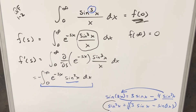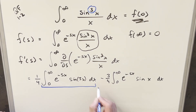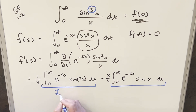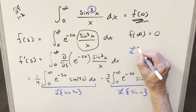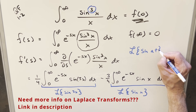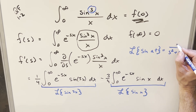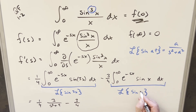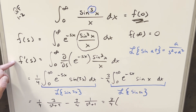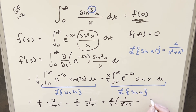Now I rewrite the integral using that formula. Distributing the minus sign and breaking into two integrals, we have two Laplace transforms. Using the formula that the Laplace transform of sin(at) equals a over (s² + a²): for the first term, a = 3, giving 3/(s² + 9); for the second, a = 1, giving 1/(s² + 1). Factoring out 3/4, we get f′(s) = (3/4)[1/(s² + 9) − 1/(s² + 1)].